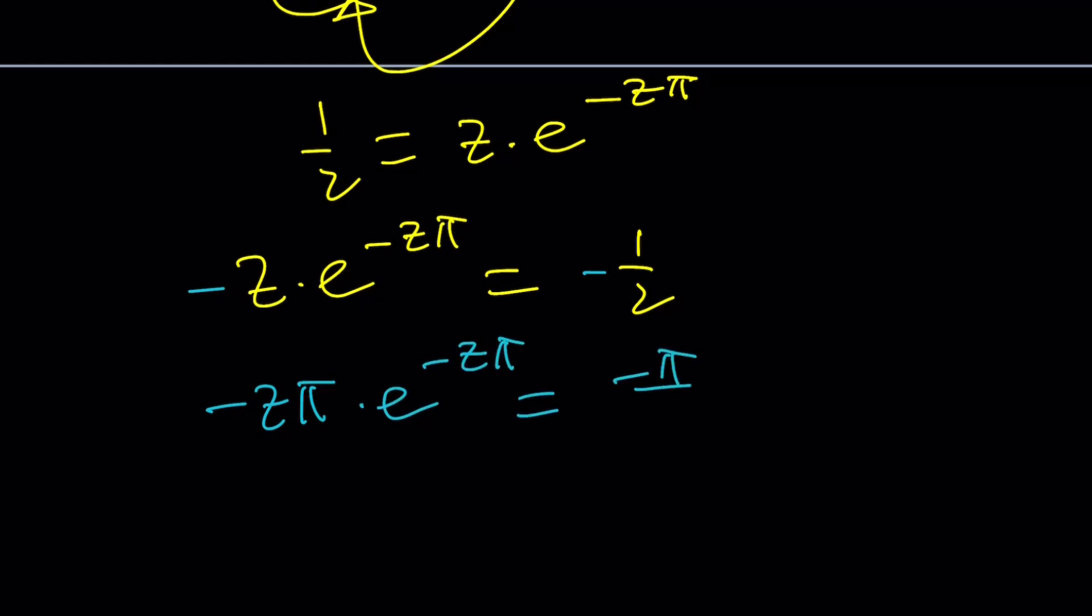You see, we are right at the exact same solution. If you Lambert this one, that's going to give you negative zπ. If you Lambert this one, you know what you're going to get. And you will proceed as follows, or the same way. And this brings us to the end of this video.